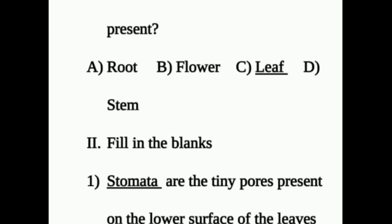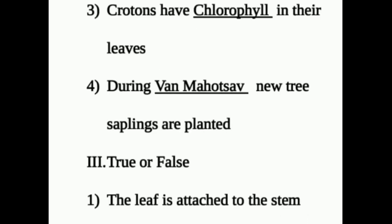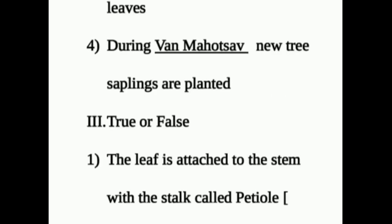Roman II: Fill in the blanks. Question 1: Dash are the tiny pores present on the lower surface of the leaves — answer: stomata. Question 2: Starch with iodine solution gives dash color — answer: blue-black. Question 3: Crotons have dash in their leaves — answer: chlorophyll. Question 4: During dash, new tree saplings are planted — answer: Van Mahotsav.